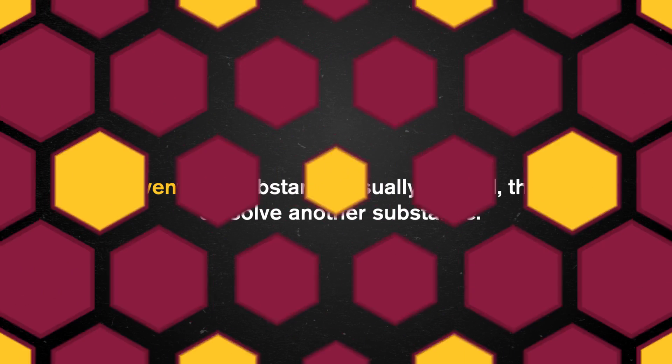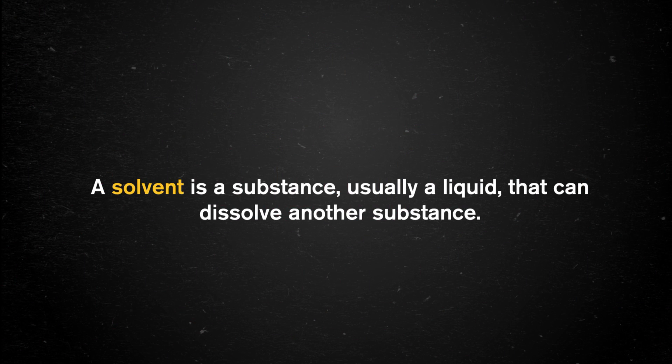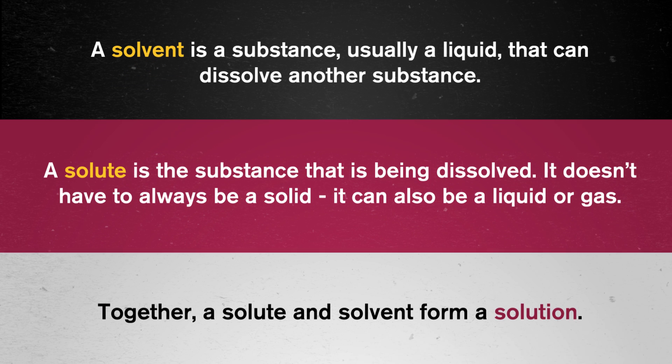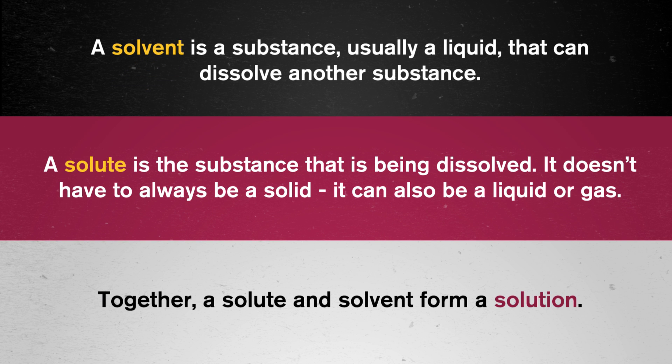In order to become solubility masters, we need to first understand some key terms. A solvent is a substance, usually a liquid, that can dissolve another substance. A solute is the substance that is being dissolved — it doesn't have to always be a solid; it can also be a liquid or a gas. Together, a solute and a solvent form a solution.